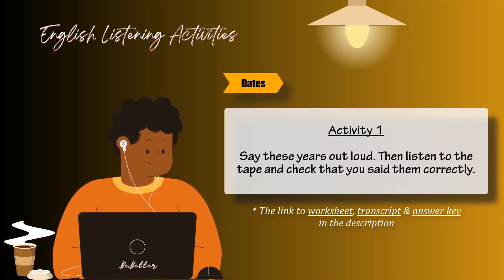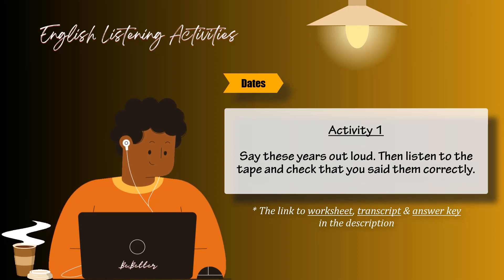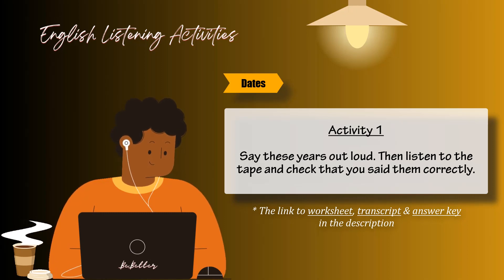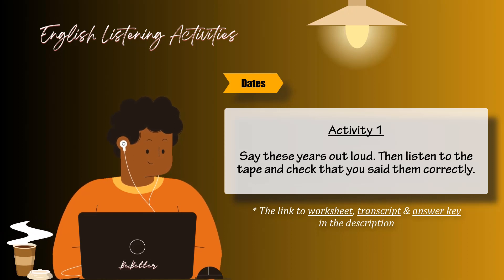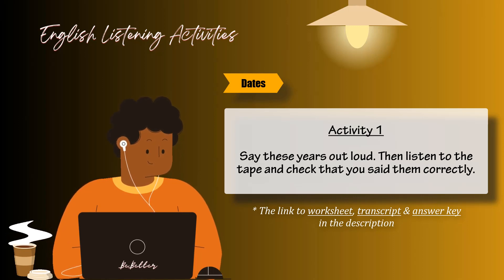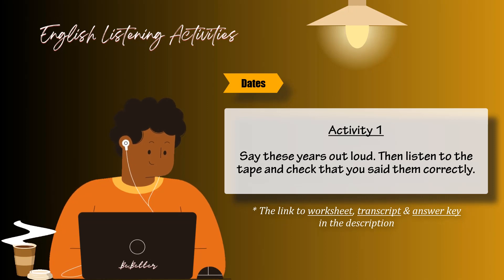Dates. Activity one. Say these years out loud. Then listen to the tape and check that you said them correctly. Eighteen seventy-nine. Nineteen fifty-two. Fifteen thirty-nine. Eighteen hundred. Nineteen seventy-eight. Seventeen sixty. Nineteen thirteen. Nineteen seventeen. Nineteen o-one. Nineteen seventy. Nineteen twenty-nine. Eighteen ninety-nine. Nineteen o-eight. Ten sixty-six.